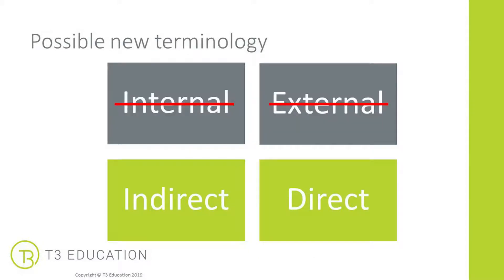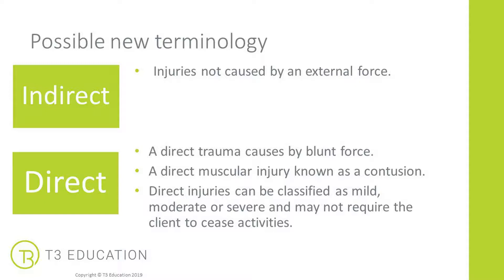Let's look at some possible new terminology when discussing risk factors of injury. Rather than referring to them as internal/intrinsic or external/extrinsic, we can change the terminology to indirect or direct — an indirect cause and a direct cause of an injury. This wording is easier for clients to understand. An indirect injury is one not caused by an external force. A direct injury can be direct trauma caused by blunt force, a direct muscular injury known as a contusion, classified as mild, moderate, or severe, and may not require the client to cease activities depending on severity.